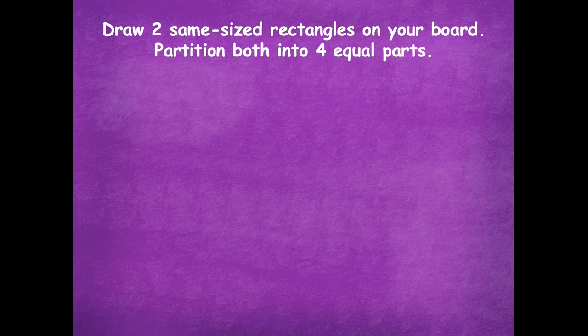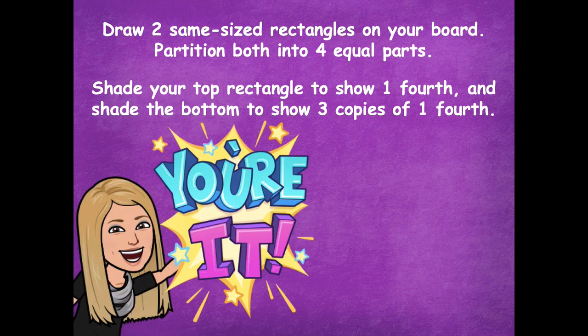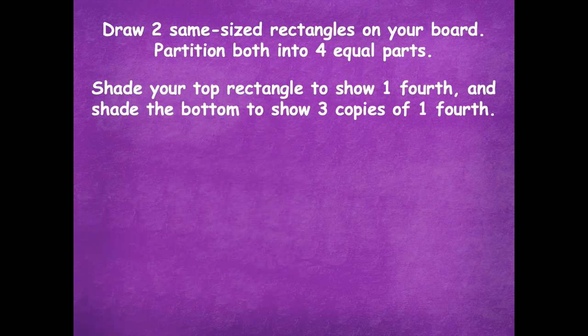Here we're going to draw two same-size rectangles on your board and then partition each into four equal parts. Draw them on top of each other, split them into four equal parts. Then shade the top rectangle to show one-fourth and shade the bottom rectangle to show three copies of one-fourth. So pause the video, draw your two rectangles, partition into four equal parts, shade the top as one-fourth and the bottom as three copies of one-fourth, and click play when you're ready to go over it together.